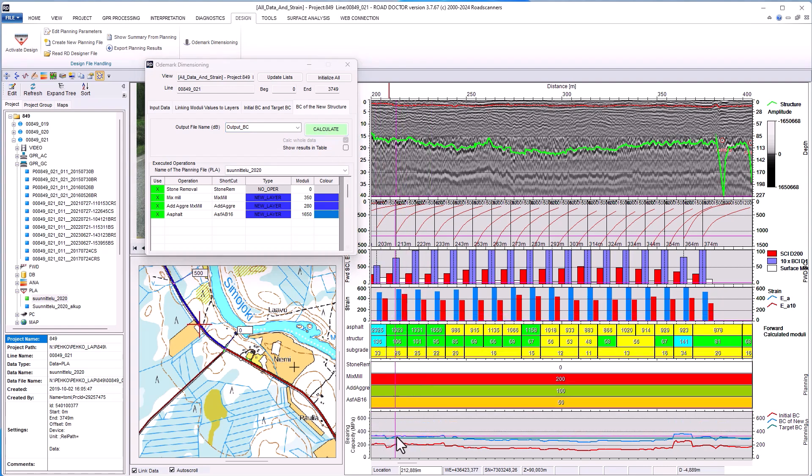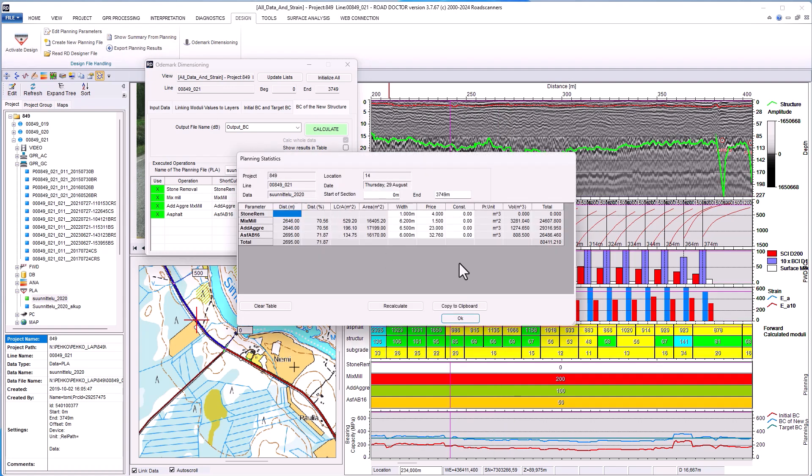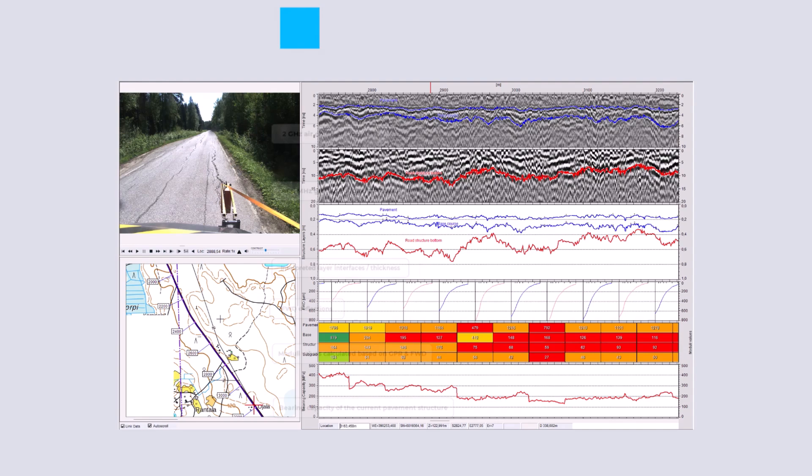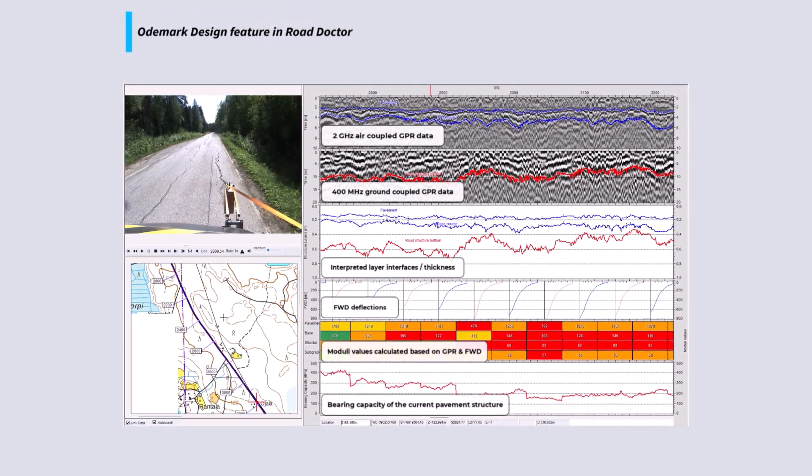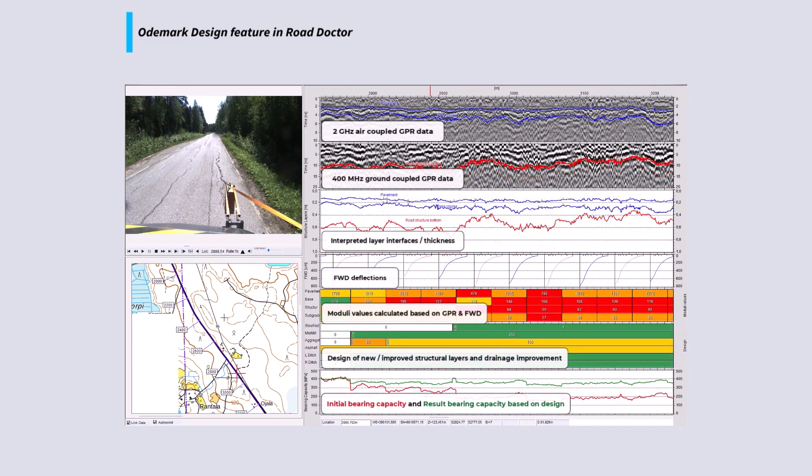After that, designers can design a new structure by removing and adding new layers or by improving current layers, for example by stabilizing. When this is done, software allows designers to calculate the volumes and the masses as well as the prices of the removed, added, or processed structures.